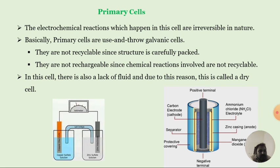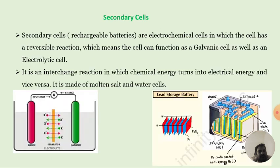The dry cell is built with a carbon electrode that acts as a cathode. It has two terminals: one is the negative terminal and another is the positive terminal. There is also a separator and a zinc casing that acts as the anode, and manganese oxide that covers the carbon electrode. Ammonium chloride is the electrolyte. The middle electrode is carbon. This cell is also called the Leclanche cell, invented by Leclanche.